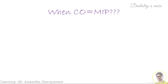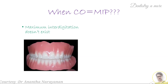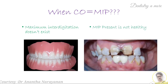Now let's understand when centric occlusion will be equal to maximum intercuspation. There are only two indications. The first is in a completely edentulous patient where there is no MIP — the patient does not have any occlusion. When rehabilitating this patient and giving a new occlusion, the occlusion established should be in centric relation, making centric occlusion equal to maximum interdigitation. The second indication is where some occlusion is present but it is not sufficient or healthy enough for a restoration to survive, so the new occlusion established will be in centric relation, making centric occlusion equal to MIP.